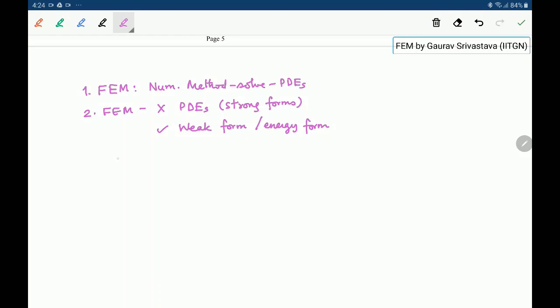We have seen how to start with a strong form and reach its corresponding weak form. We have also seen how weak form is equivalent to a strong form.